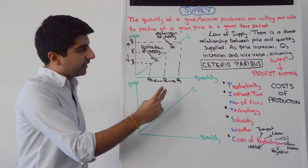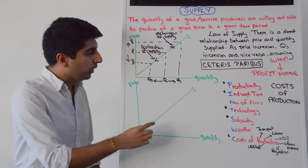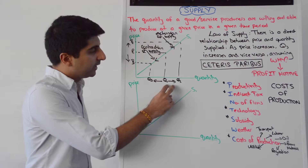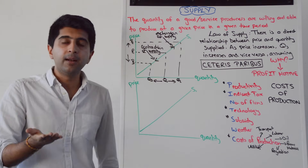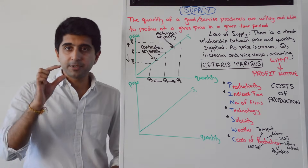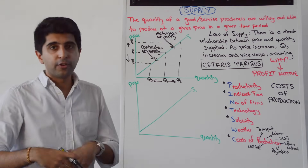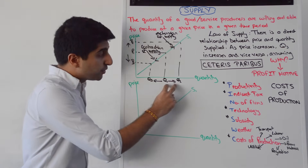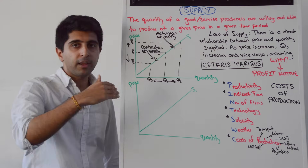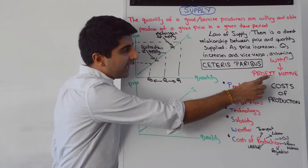If we look at the other direction on the x-axis — why, when quantity goes up, do suppliers want a higher price? When quantity goes up, costs of production are going up for suppliers. To produce those extra units the costs are higher. Therefore suppliers want a higher price to cover their costs of production and to maintain their profit margins. So everything comes back to the profit motive: the reason the supply curve is upward sloping is this direct relationship driven by profit.